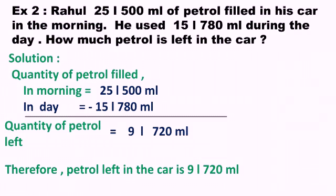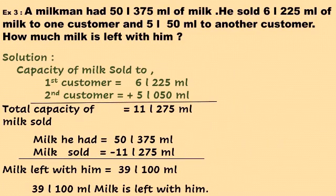For the solution, write the quantity of petrol filled in the morning and the quantity used during the day. After subtraction, the result is 9 liters 720 milliliters. You can make two columns of liters and milliliters for the calculation. Therefore, the petrol left in the car is 9 liters 720 milliliters.